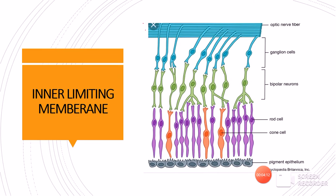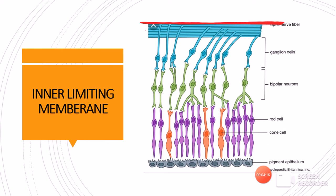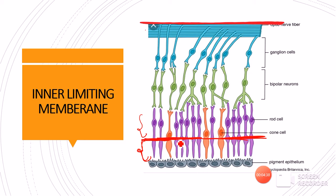Finally, the innermost layer is the inner limiting membrane. The outer limiting membrane was present between the layer of rods and cones and the outer nuclear layer. The inner limiting membrane is the innermost layer of the retina.